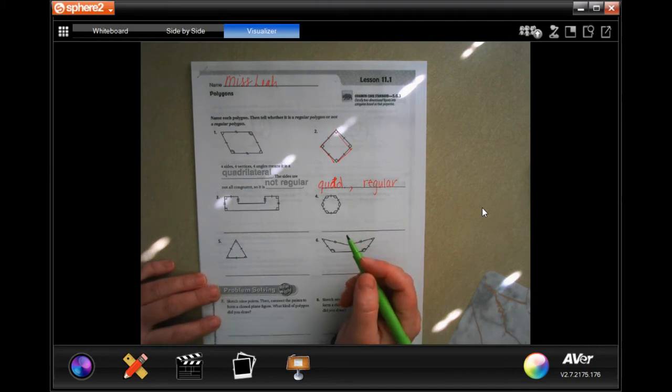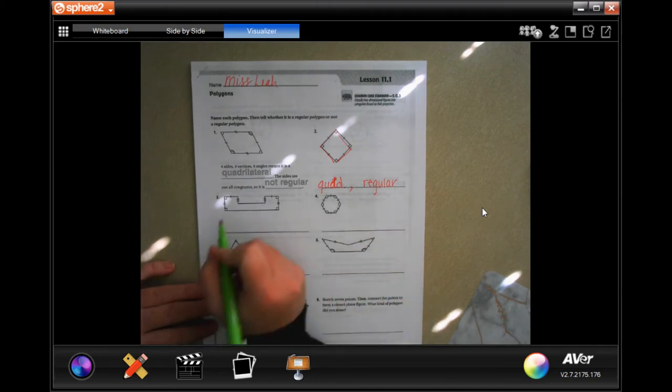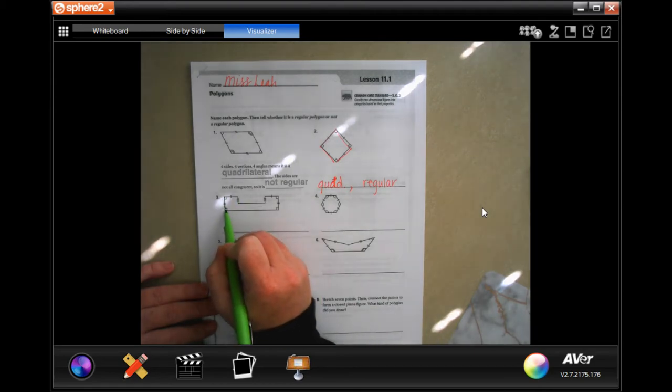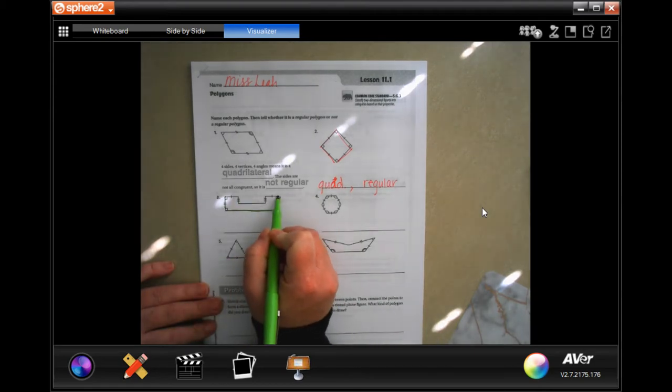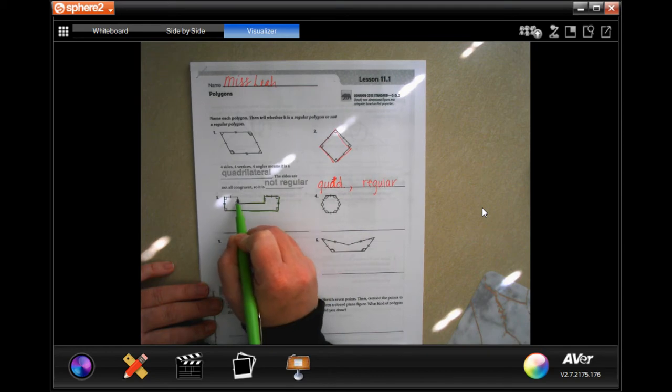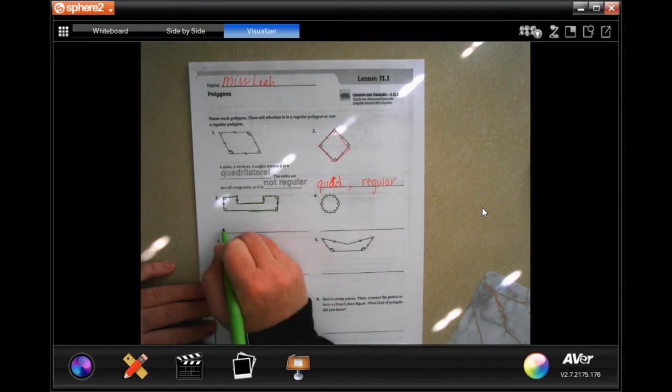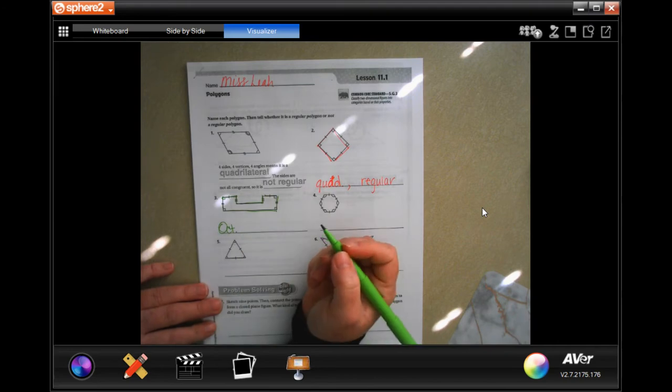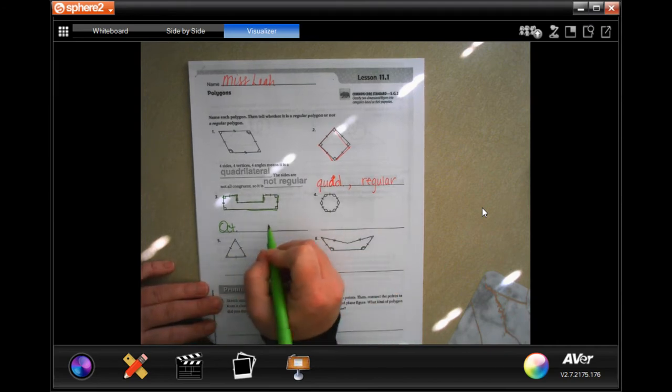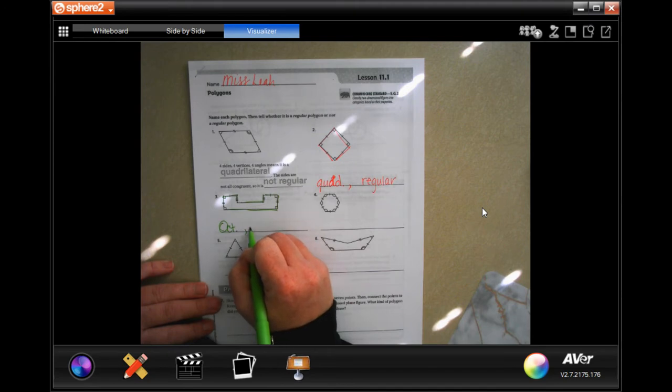So this one has one, two, three, four, five, six, seven, eight sides, which makes it an octagon. But it's not a regular octagon, so irregular or not regular.